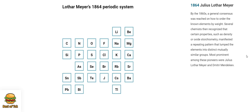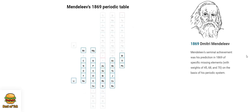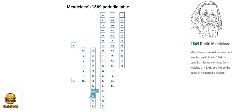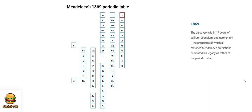Most prominent among these pioneers were Julius Lothar Meyer and Dmitry Mendeleev. Mendeleev's seminal achievement was his prediction in 1869 of specific missing elements, with weights of 45, 68 and 70, on the basis of his periodic system. The discovery within 17 years of gallium, scandium and germanium — the properties of which all matched Mendeleev's predictions — cemented his legacy as father of the periodic table.